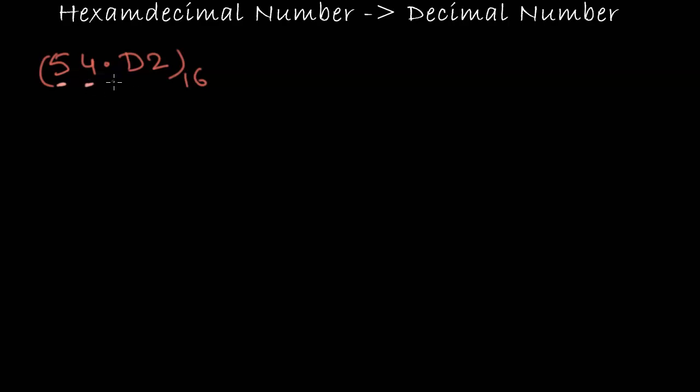So 5, 4 and then we have a decimal point. So 5 is basically 5 into 16 to the power 1 plus 4 into 16 to the power 0 plus D into 16 to the power minus 1 because it is on the right hand side of the decimal point and then plus 2 into 16 to the power minus 2.